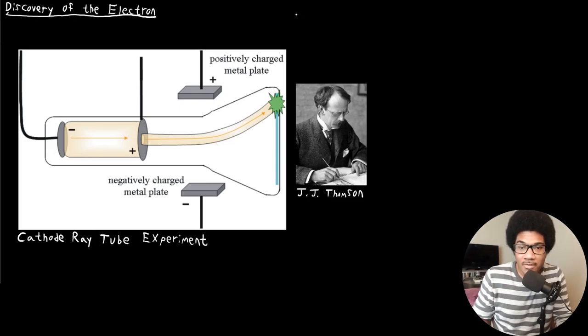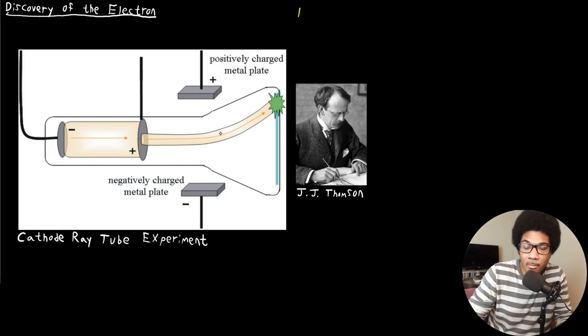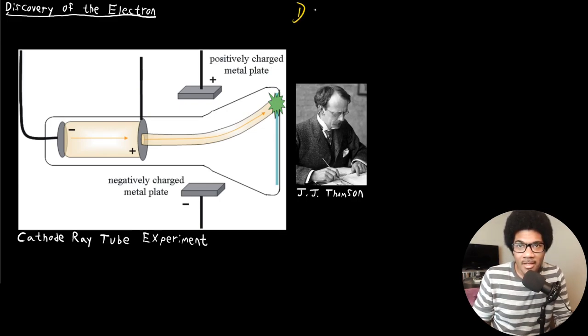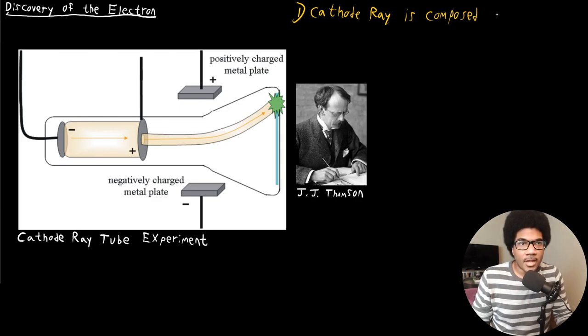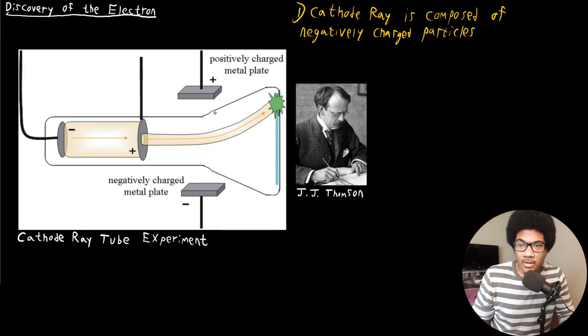What he figured out and what he saw was that the ray started to bend away from the negatively charged metal plate and towards the positively charged metal plate of his applied magnetic field. What that means, and the first real big conclusion from the J.J. Thompson cathode ray tube experiment is that this ray or beam is composed of negatively charged particles. The cathode ray is composed of negatively charged particles.